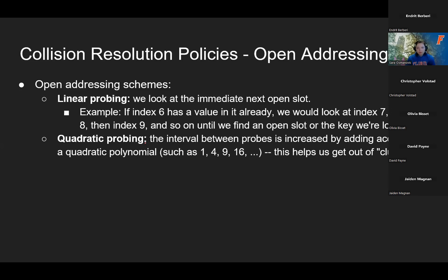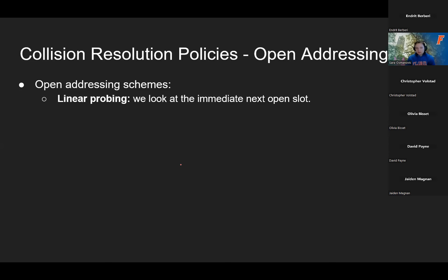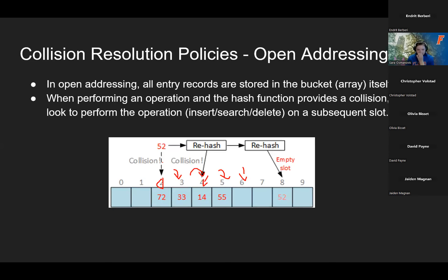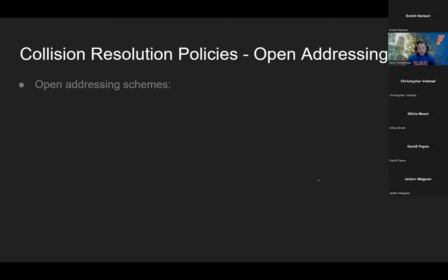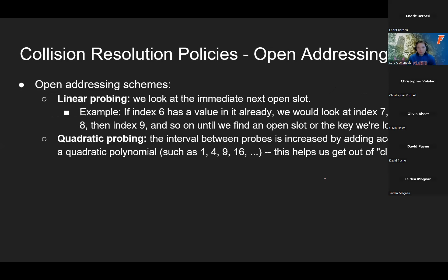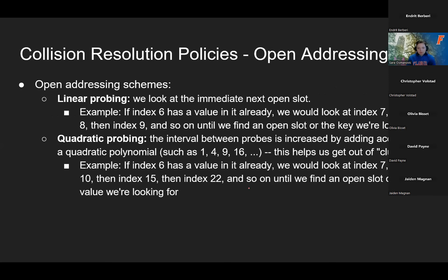Quadratic probing keeps increasing the interval between checks to eliminate clusters. For example, trying to insert 52 at index 2 — it's occupied. You try index 3, occupied. Then you try 2 more ahead at 5. Then 4 spaces ahead, and so on, incrementing the interval quadratically. Quadratic probing is most common at this point because it helps remove clusters, spreading data out instead of having it all bunched in one spot.